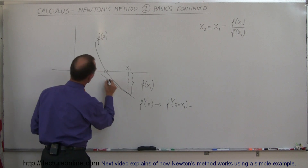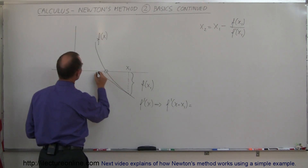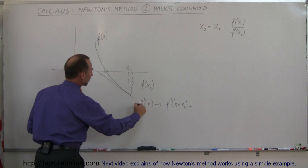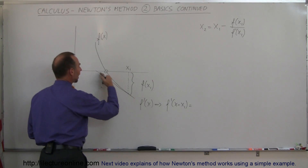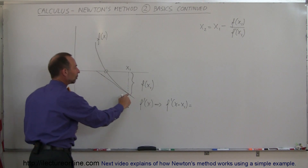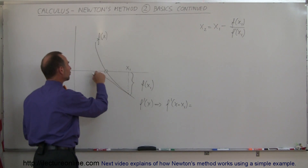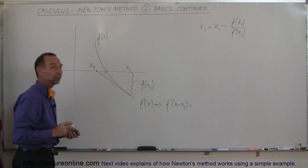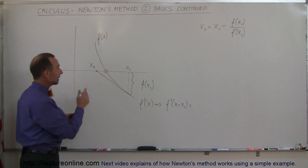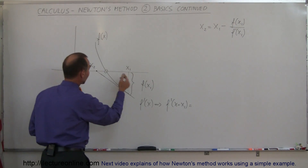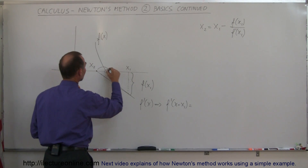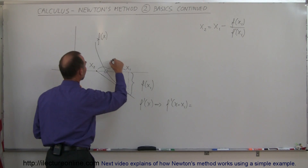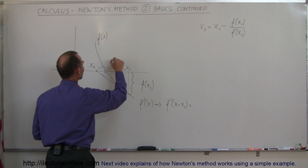Notice that if you follow a line that has that slope through that point, you end up at a new point — this should be your second point x₂. The difference, the distance between the two points, let's call that delta x.